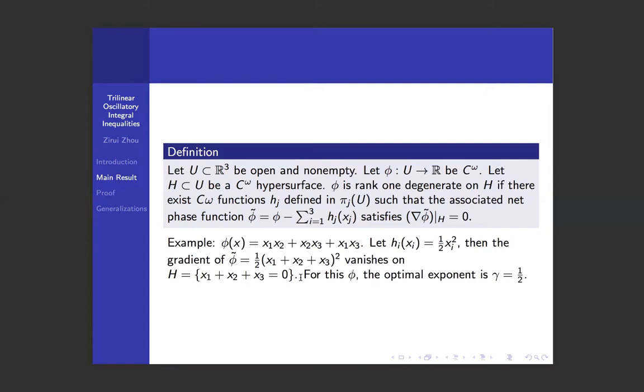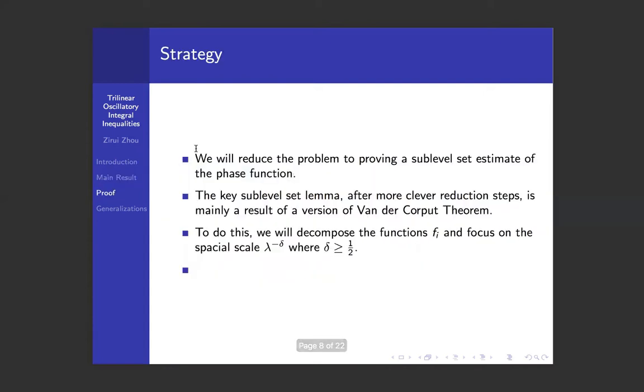However, it will be clear when we look into the proof. The strategy of proof is that we will eventually reduce the problem to a sub-level set estimate. And there, we will see the necessity and sufficiency of this rank 1 non-degeneracy hypothesis. To achieve this reduction step, we shall decompose our function f_i into Fourier series on intervals of λ^(-δ), for some δ strictly greater than ½.